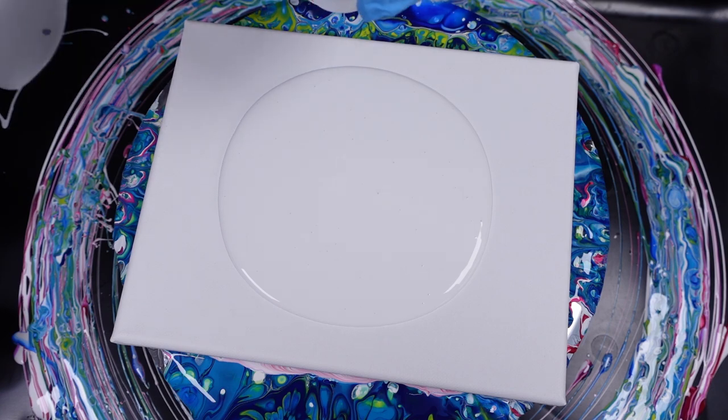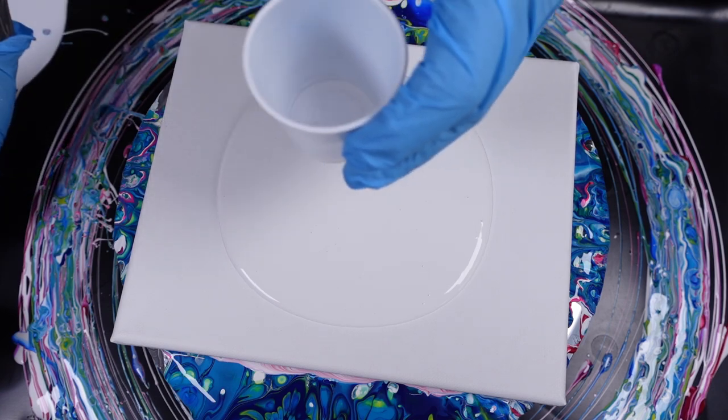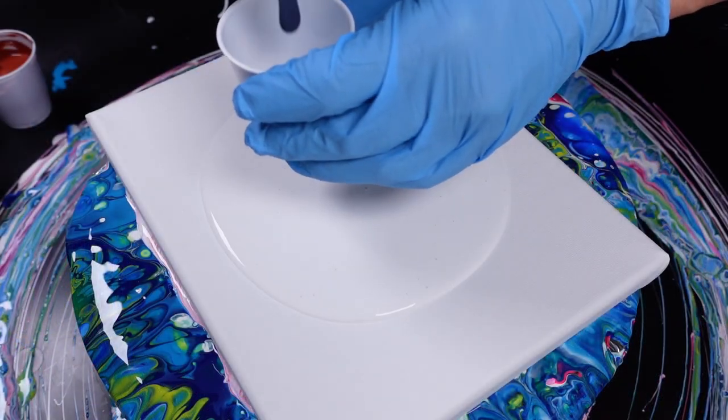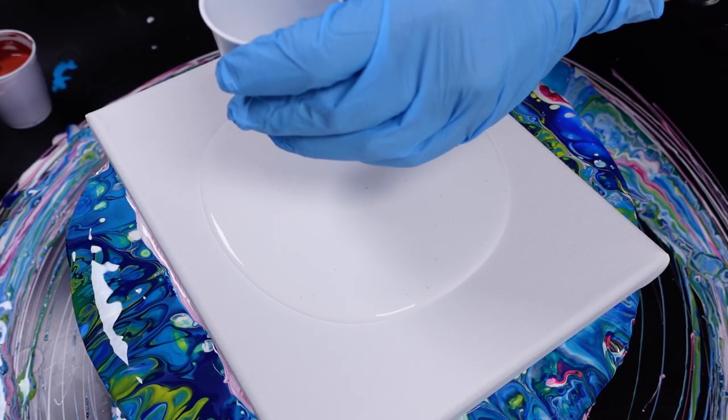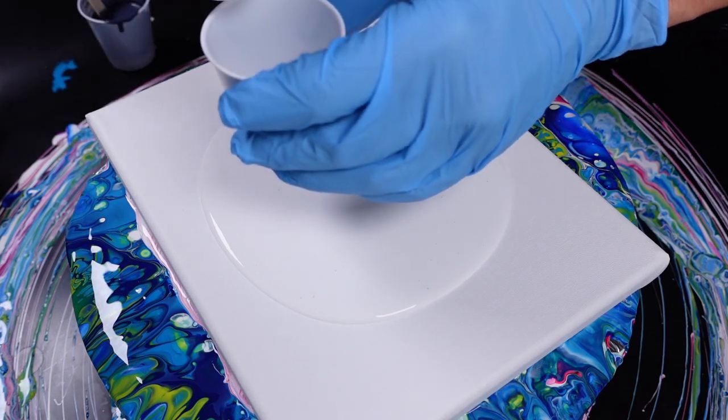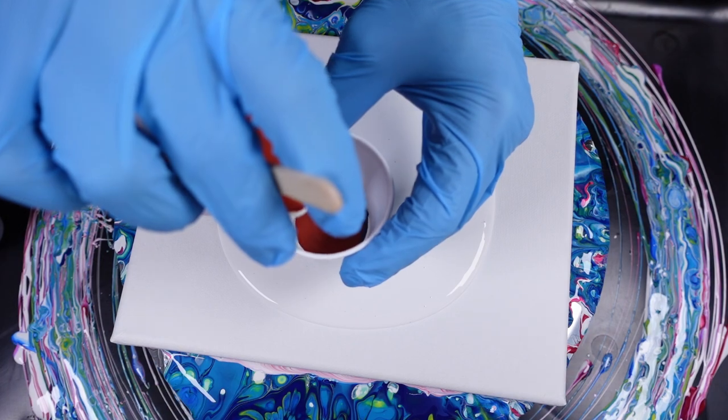We're going to start by kind of just layering the cup. So whatever's on the bottom is going to be in the center. So I just want to have a little tiny bit right there, and then we'll get more bold and colorful as the layers go on.